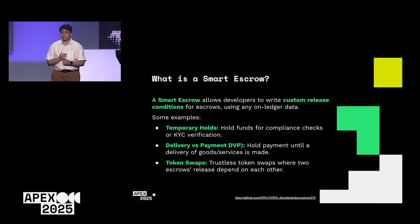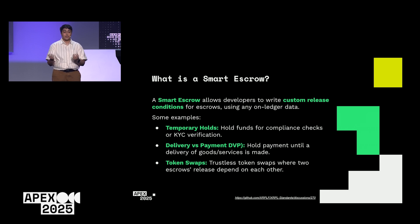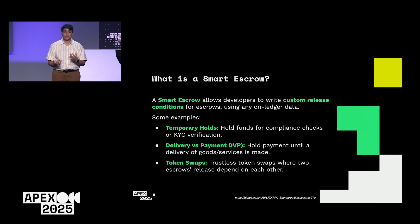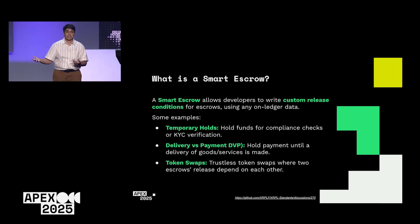You currently have time-based and condition-based releases. Smart escrows essentially allow you to add a third release condition that can do whatever your custom code does. One example is temporary holds: you can hold some funds you want to send to somebody, but they need to be KYC-checked or something like that before they can actually receive those funds.